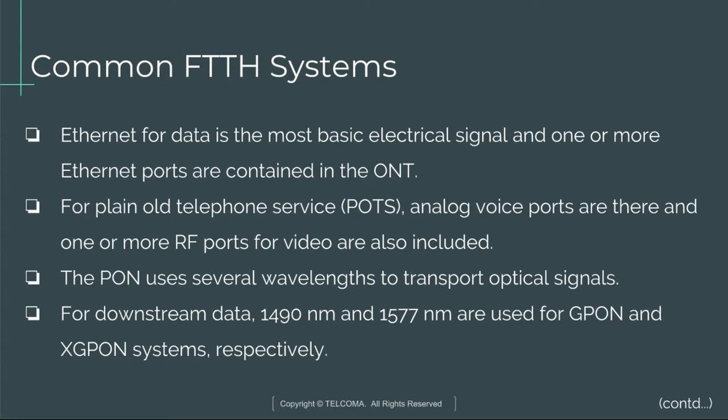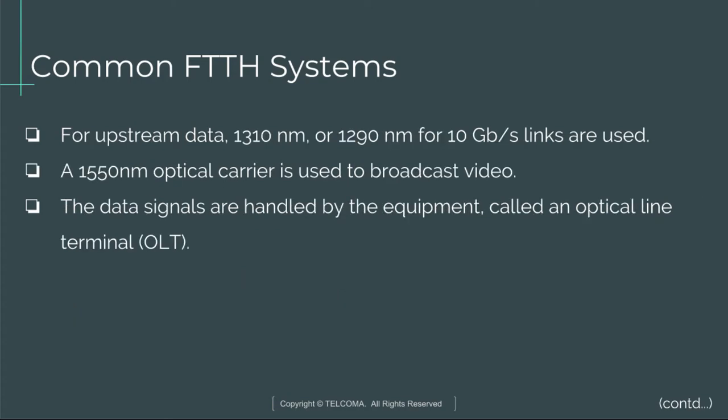The PON uses several wavelengths to transport optical signals. For downstream data, 1490nm and 1577nm are used for GPON and XGPON systems respectively. For upstream data, 1310nm or 1290nm for 10 Gbps links are used. A 1550nm optical carrier is used for broadcast videos. The data signals are handled by the equipment called an optical line terminal.